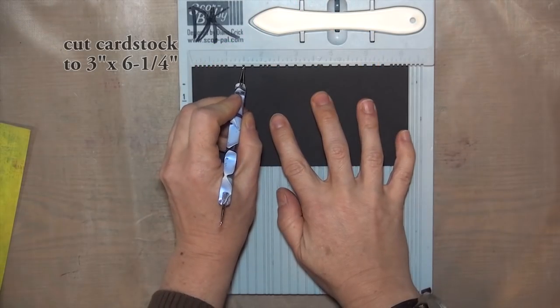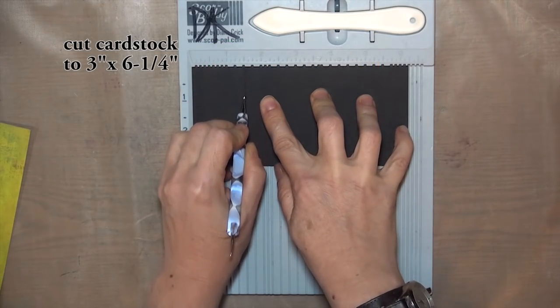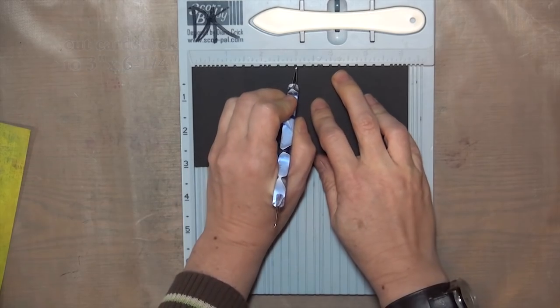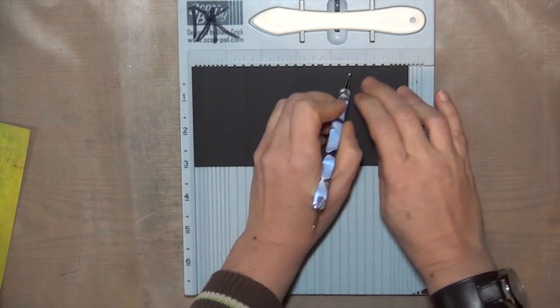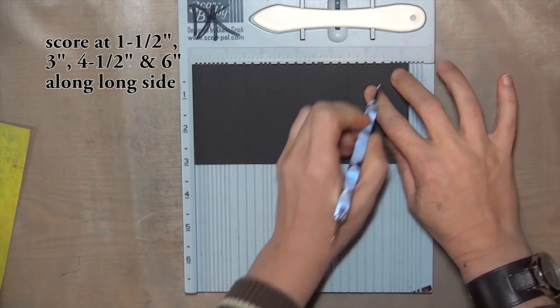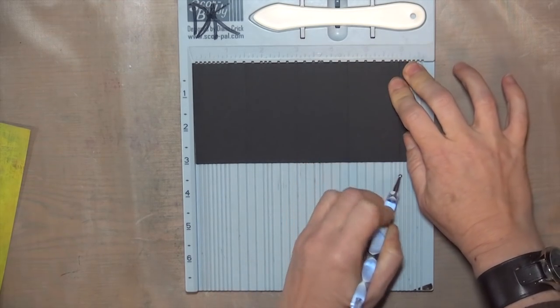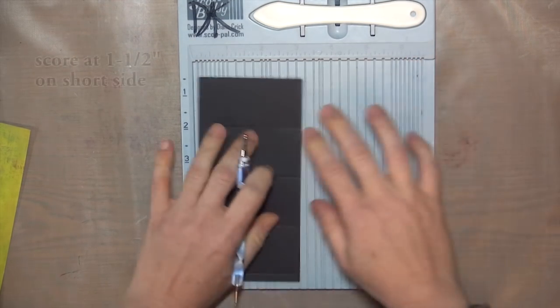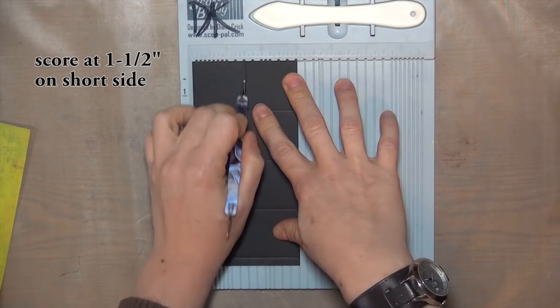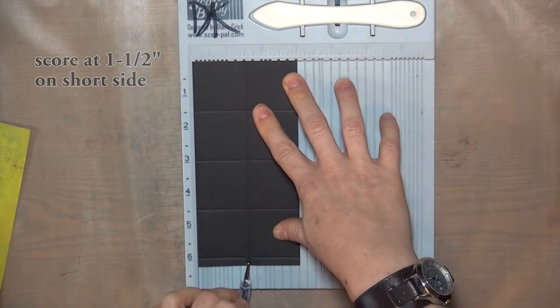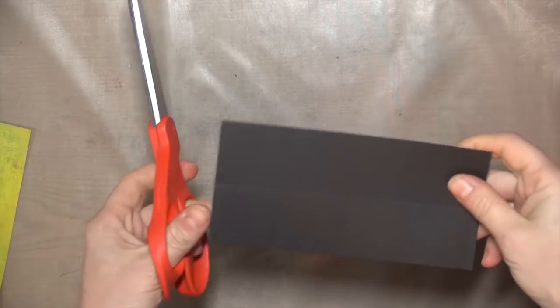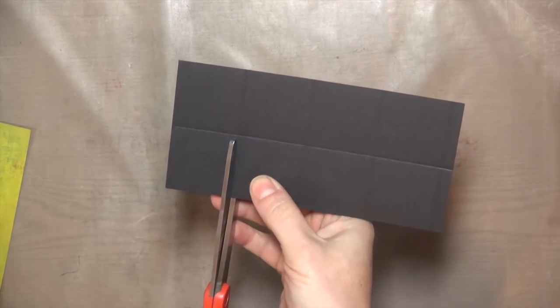We'll start by making the box for the treat holder. This cardstock is cut to 3 inches by 6.25 inches, and I'm scoring at 1.5 inches, 3 inches, 4.5, and 6 inches along the long side, and then at 1.5 inches down the center from the short side. That gives me the sides of a 1.5 inch cube, with a little tab to glue at the end.